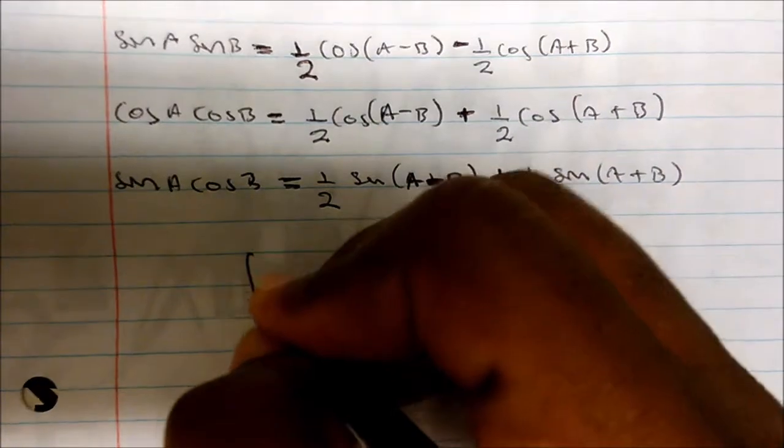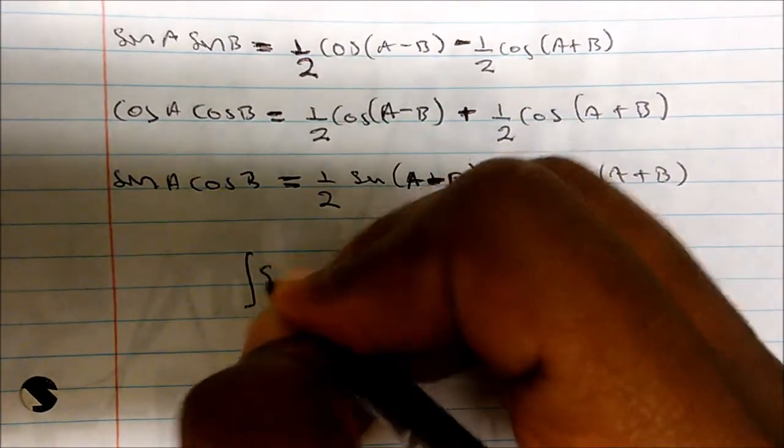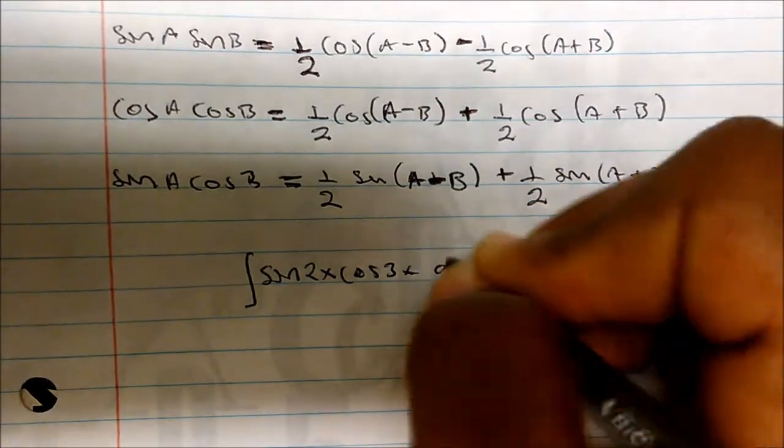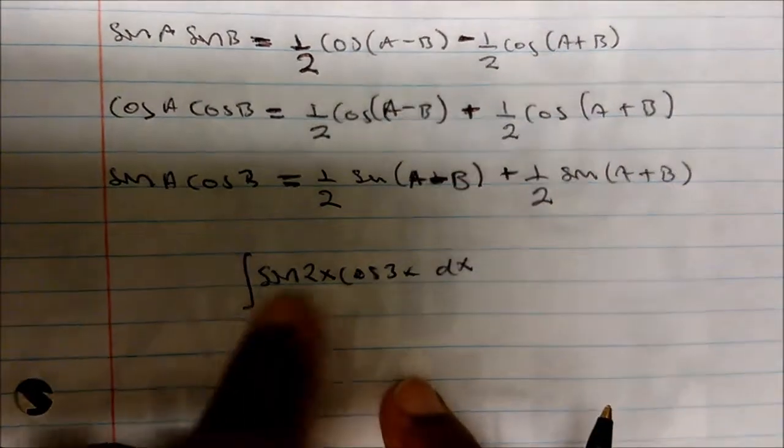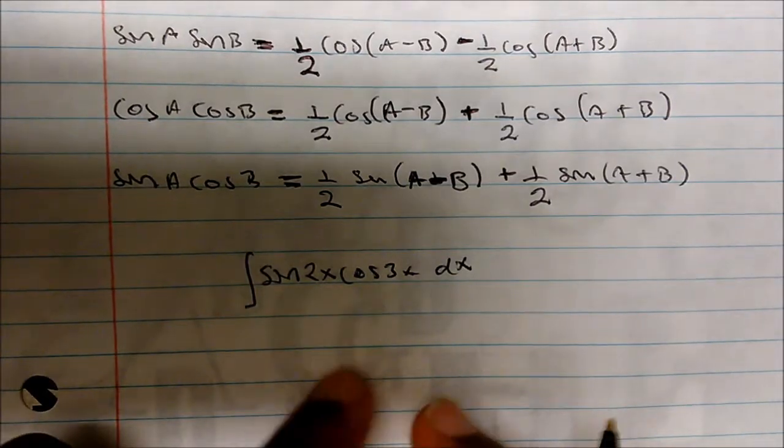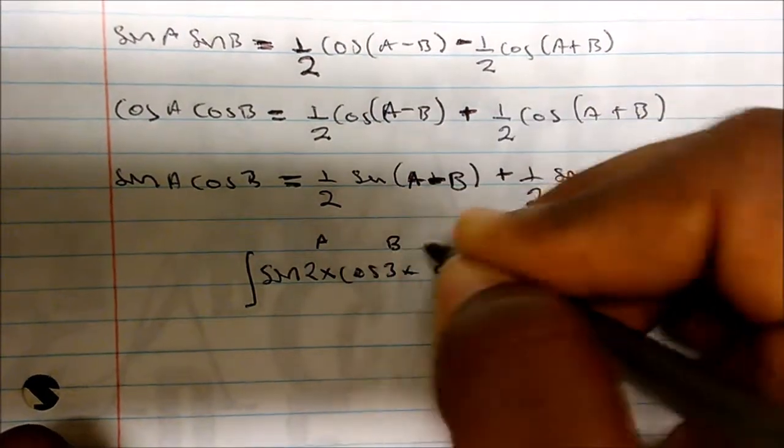But let's look at a simple problem. So what if we want to integrate sine 2x cosine 3x dx? Well notice that this maps to this one, and so we have a - there's your a, and there's your b.